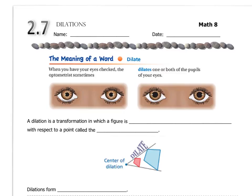Our last type of transformation is a dilation. You might know this from the eye doctor — every time you go, they dilate your pupils, the dark part of your eye. They dilate them so the pupil gets larger and they can see inside your eye. You have to wait a half an hour, and then your eyes feel funny and everything's blurry. But that's what a dilation is: it's when a figure is enlarged or reduced.